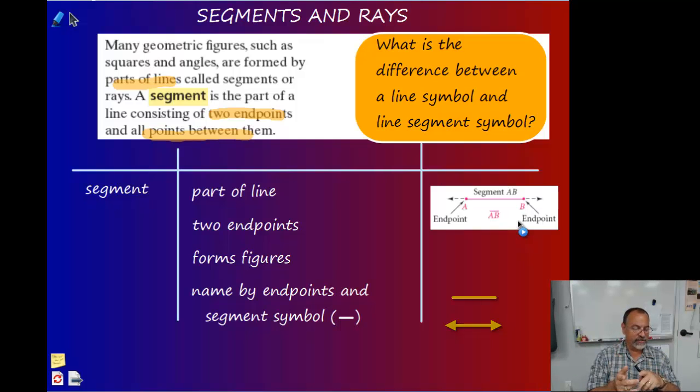The segment doesn't have any arrows. Why doesn't it have any arrows? Well, arrows show that it's going on forever. If there aren't any arrows, that means it stops. Any segment stops. A line goes on forever. So it's very important that you make sure when you are trying to communicate to me that you're talking about a line, you use the arrows. When you're trying to indicate you're only talking about a segment, you use the correct symbol.